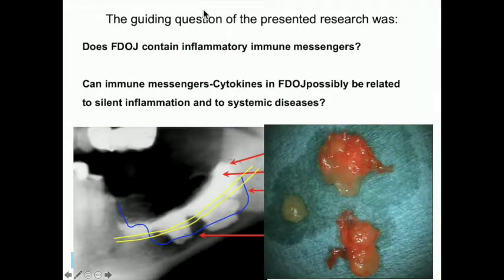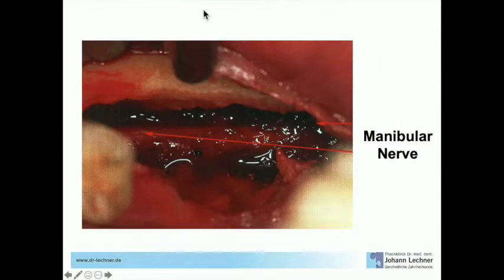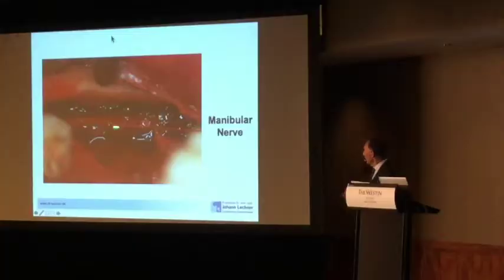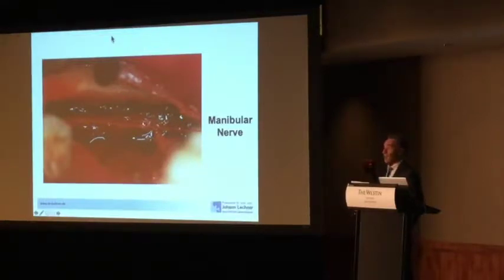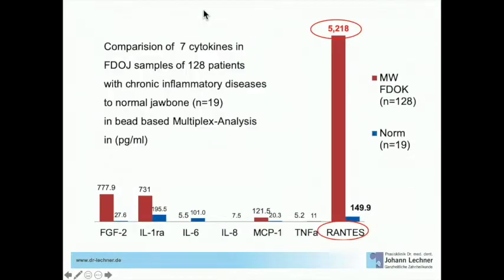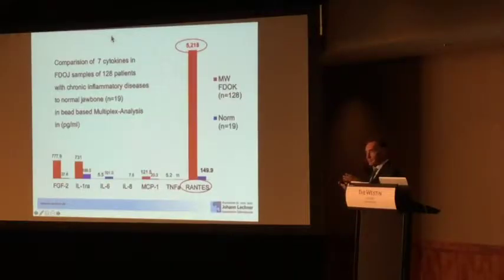You can see the mandibular nerve here totally without any bony sheath around it, lying inside the mandibular cavity. We took several of these fatty lumps obtained from our patients during surgery and sent them to the lab. Here you see 128 of these samples taken together, and in these 128 samples we measured seven cytokines.